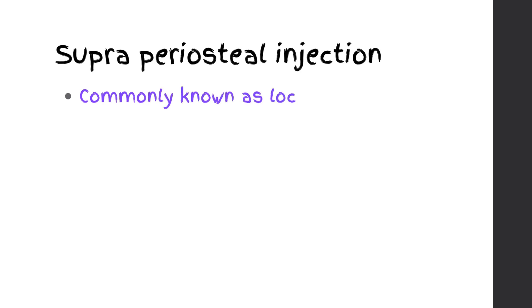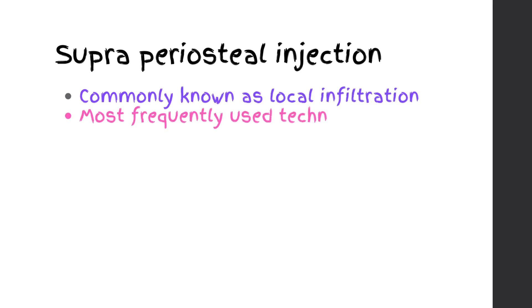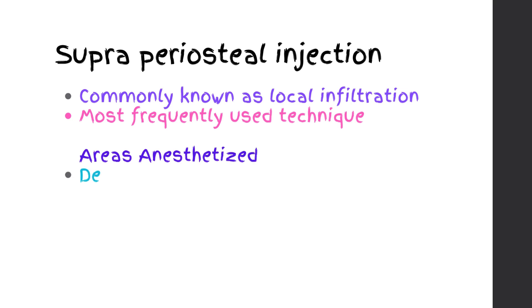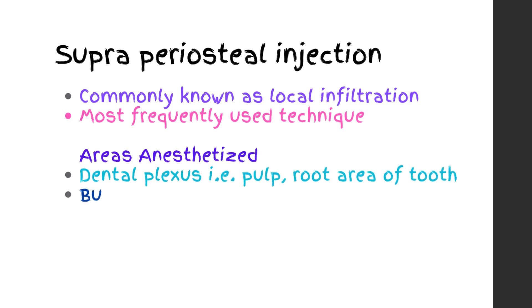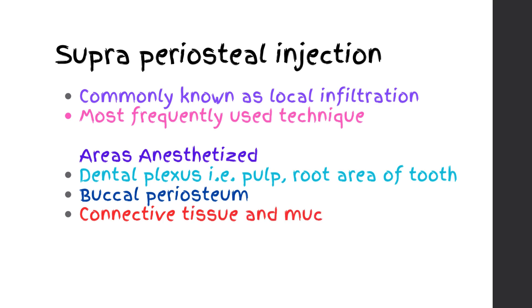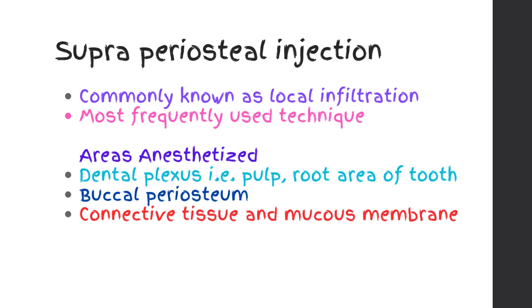Supraperiosteal Injection, commonly known as local infiltration, is the most frequently used technique. Areas anesthetized include the dental plexus — that is, pulp and root area of tooth — as well as buccal periosteum, connective tissue, and mucous membrane.